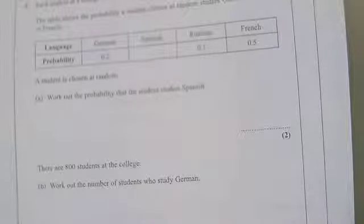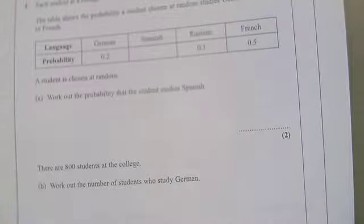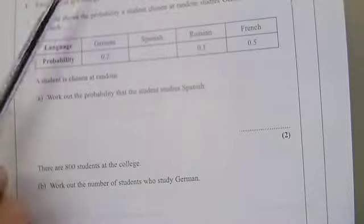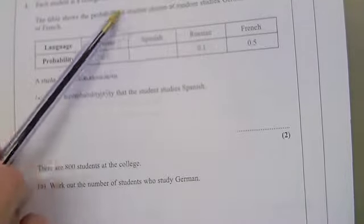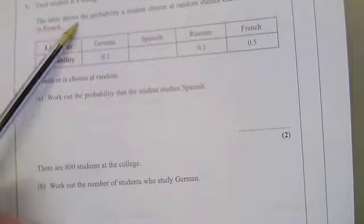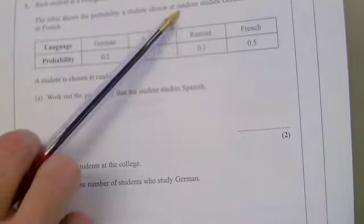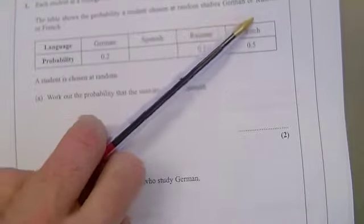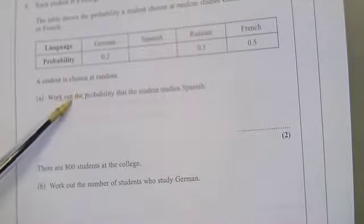I don't really read the question, I just dive straight into it. I think I know what it's asking but I need to read the question to be certain. It says each student at a college studies one of four languages, so there's only four things they can do. The table shows the probability of a student chosen at random studies German, Russian, or French.